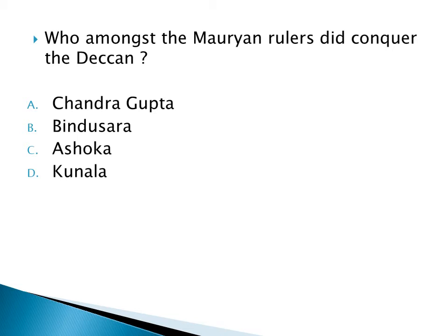Who was the son of Chandragupta Maurya? Option A: Chandragupta Maurya, Option B: Bindusara, Option C: Ashoka, Option D: Kunala. The right answer is Option B: Bindusara.